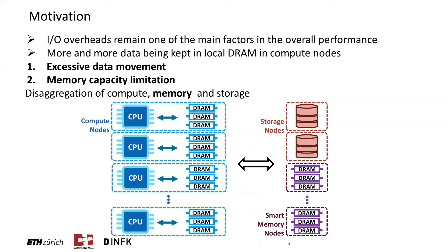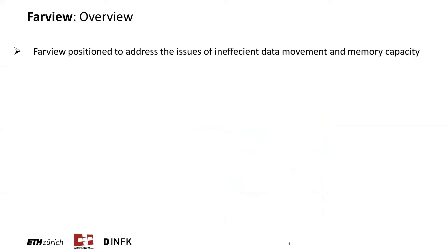This is something that is being quite actively pursued in research in various forms, as either disaggregated DRAM, disaggregated persistent memory — which might also be an interesting target for Farview — far memory, smart remote memory, and so on. So it does seem to be a trending topic currently. We position Farview to make the most of this disaggregated memory to address the issues of inefficient data movement and memory capacity, by provisioning memory for query processing nodes on demand and by offloading certain portions of the processing directly to the Farview nodes.